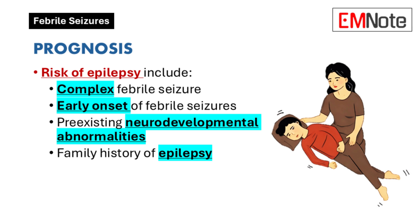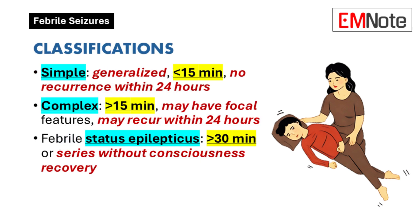Are there any factors that make that epilepsy risk higher? Yes — children who've had complex febrile seizures have a higher risk of developing epilepsy, about 6% to 8%. And a family history of epilepsy also increases the risk. So again, these classifications help us stratify that risk and have those conversations with families.